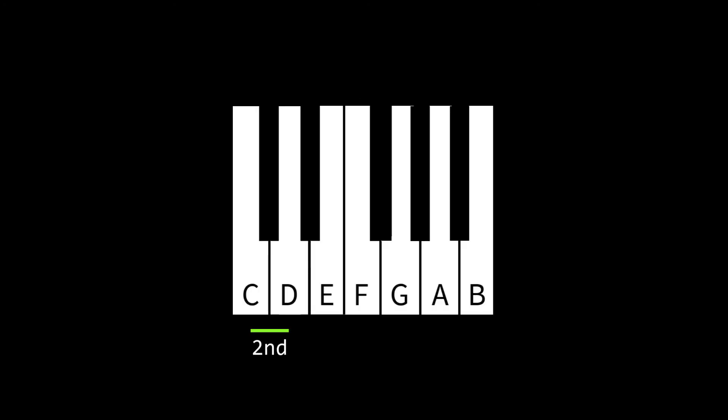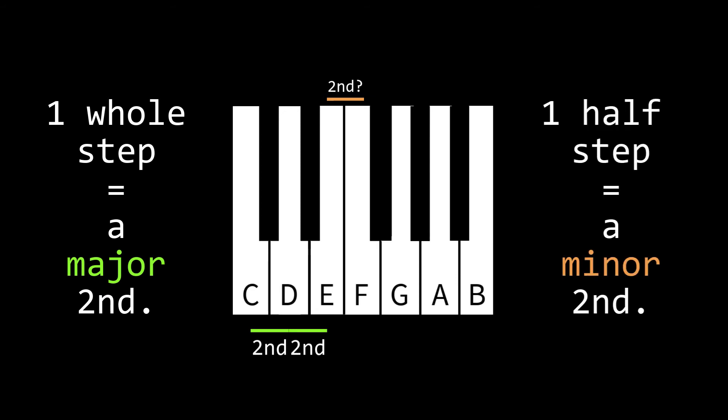Now if you've been paying attention, there's a question that needs resolved. Okay, the distance between a C and a D is a second, and the distance between a D and E is a second. Is the distance between an E and an F a second? How can that be when we know that D to E is a whole step, while E to F is a half step? The answer is that they are both intervals of a second, but a second that is comprised of a whole step is called a major second, and a second that is comprised of a half step is called a minor second.